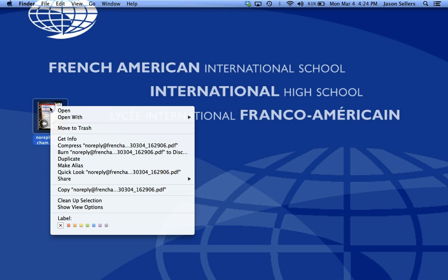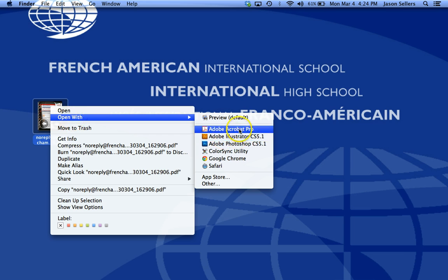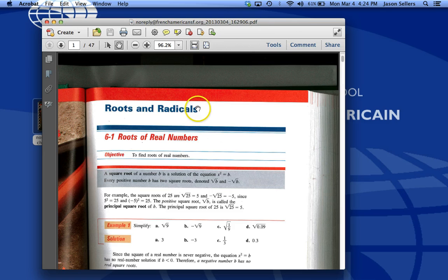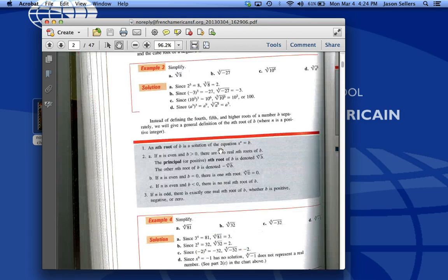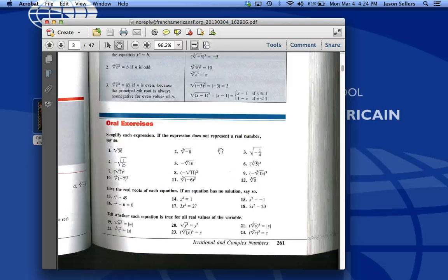First we want to open the document in Adobe Acrobat Pro, and I did that by control clicking on it. So here's my document. If I scan through it, you see some of these pages aren't rotated correctly.